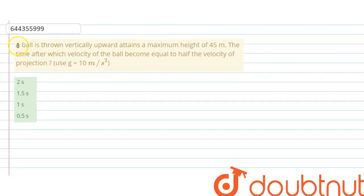Hello everyone, let me explain this question to you. A ball is thrown vertically upward, attends a maximum height 45 meter, the time after which velocity of ball becomes equal to half of the velocity of projection. Option A, 2 second. Option B, 1.5 second. Option C, 1 second. Option D, 0.5 second.